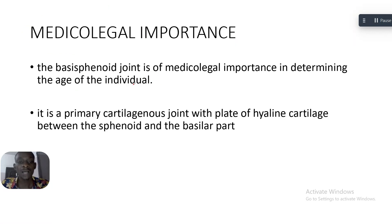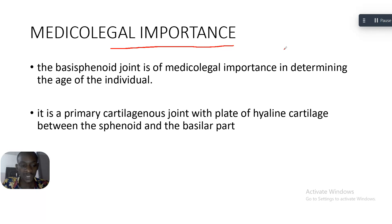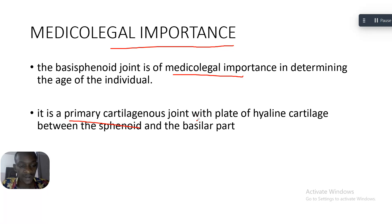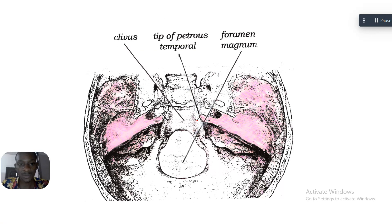Now, what is the medical legal importance of the clivus? It's not just about studying a structure — you need to know its medical importance. The basisphenoid joint, which is a joint around the clivus, is of medical legal importance in determining the age of an individual. In younger individuals, it is a primary cartilaginous joint — a plate of hyaline cartilage between the sphenoid and the basilar part.